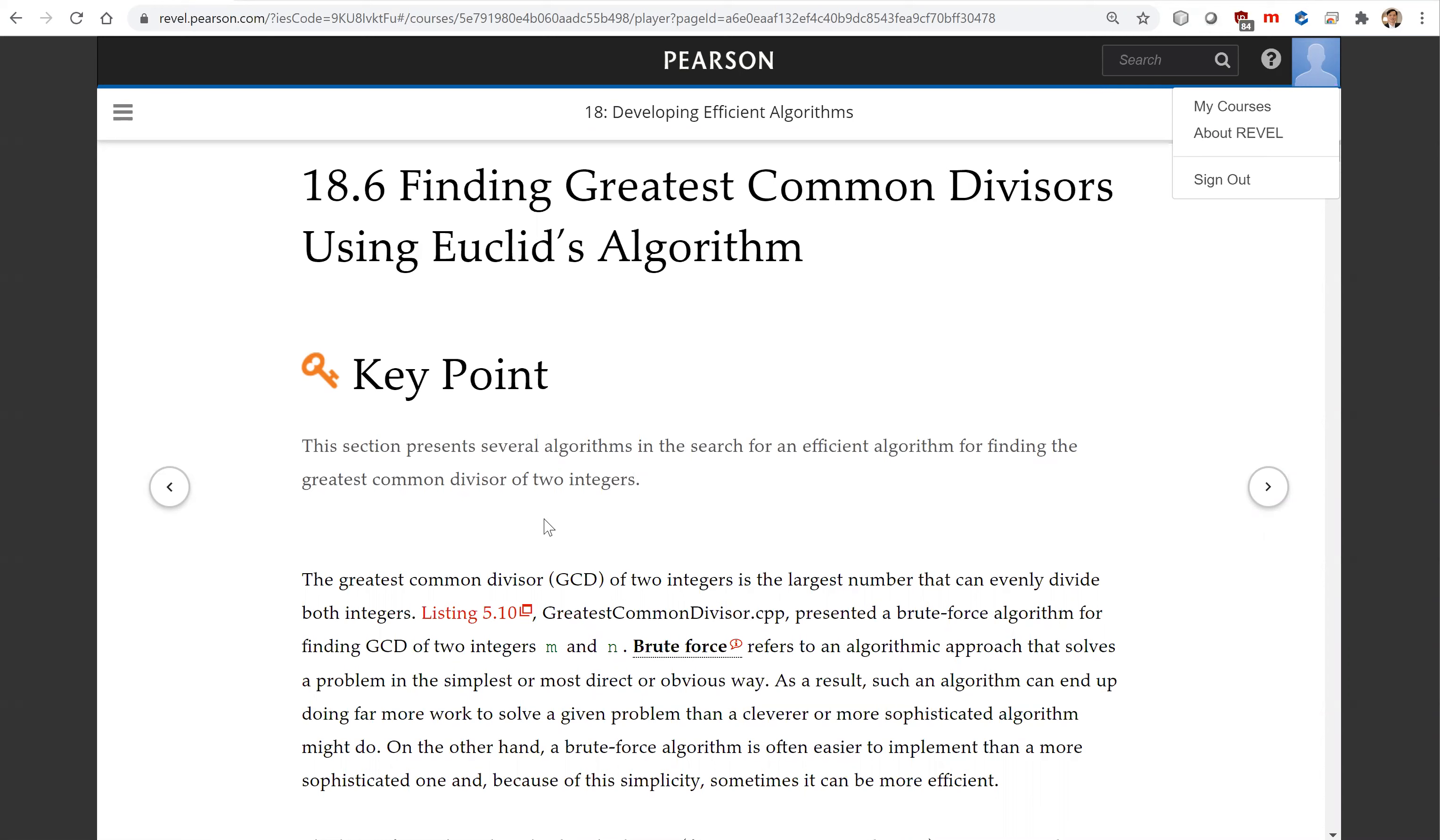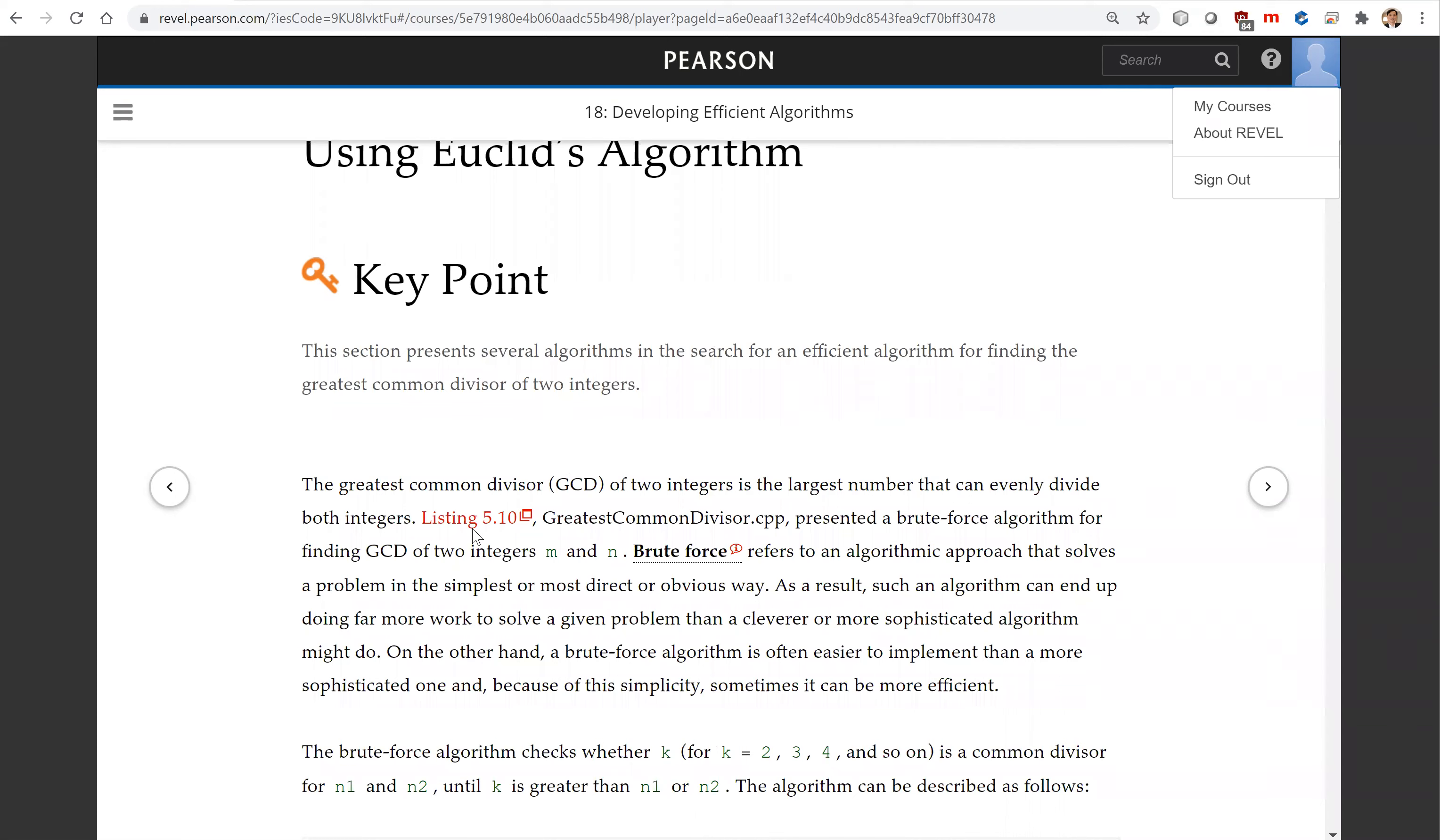We already introduced the algorithm for finding the greatest common divisor between two integers, and this was in listing 5.10. The approach was a brute force algorithm. Brute force refers to an algorithmic approach that solves a problem in the simplest or most direct or obvious way. As a result, such an algorithm can end up doing far more work to solve a given problem than a cleverer or more sophisticated algorithm might do.